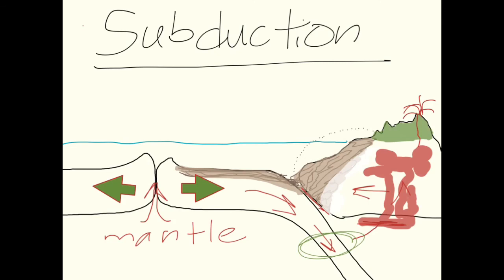They always create tsunamis because as this land returns back to its original shape, it displaces a huge amount of water. And that's why we get tsunamis from megathrust earthquakes.